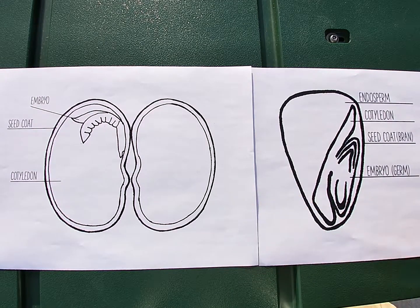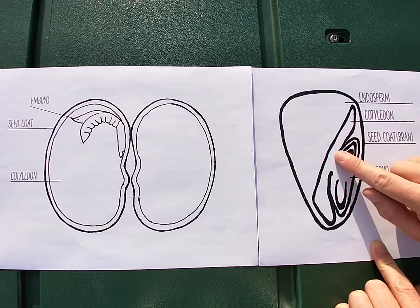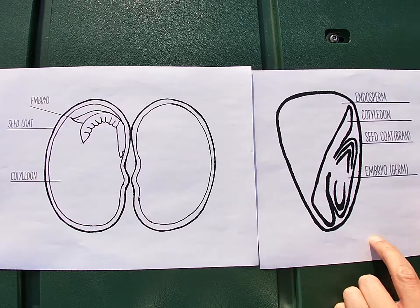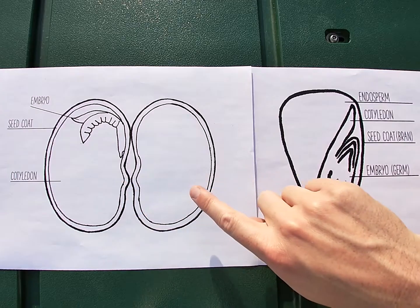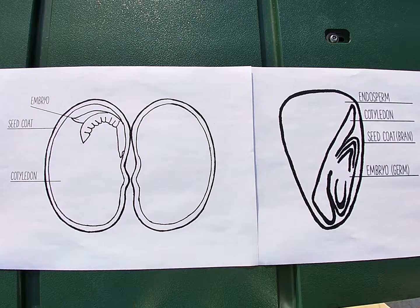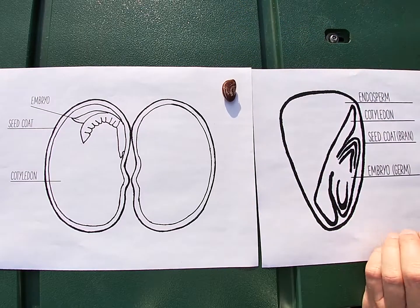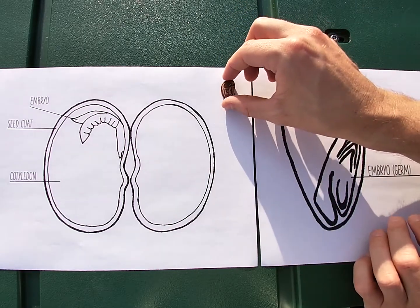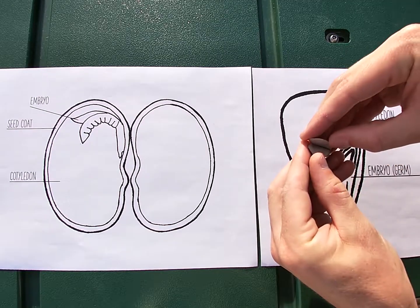Mono means one, di means two. "Cot" refers to the cotyledon, which is inside the seed — it's actually the first leaf that will emerge when it germinates. In a dicot, the cotyledon contains the majority of the food that makes up the seed. This diagram here is of a bean seed, and what I have right here is a lima bean, which is a great seed to dissect because it's so big.